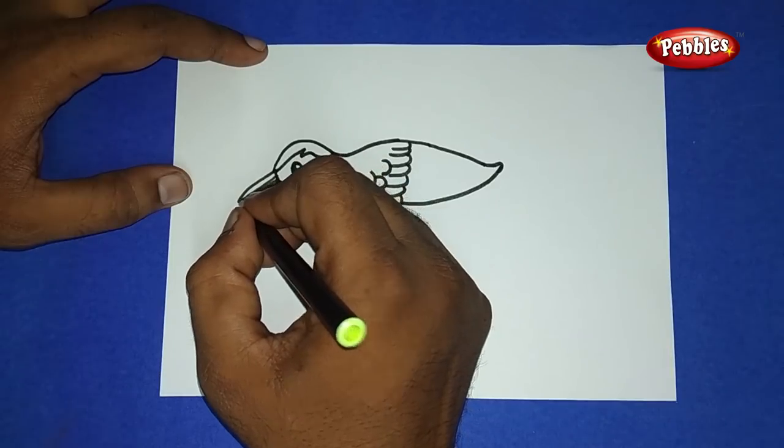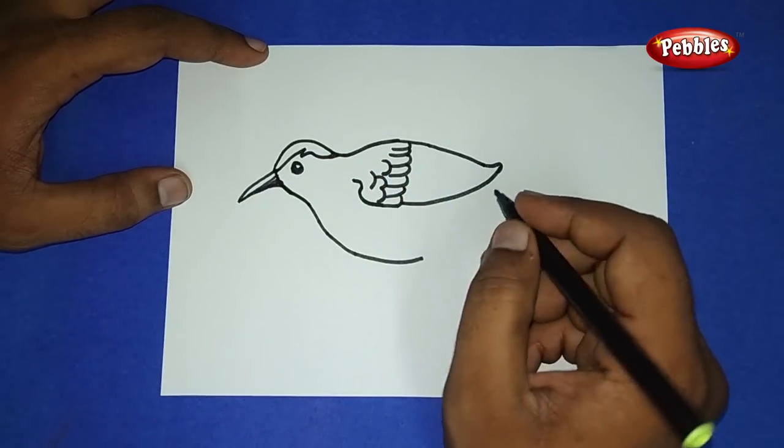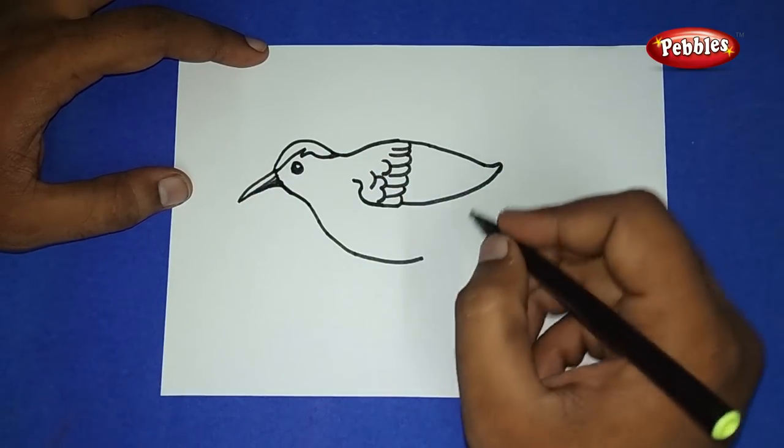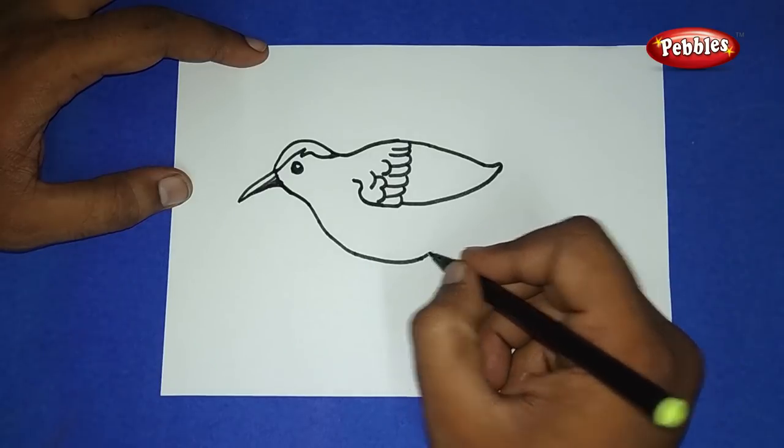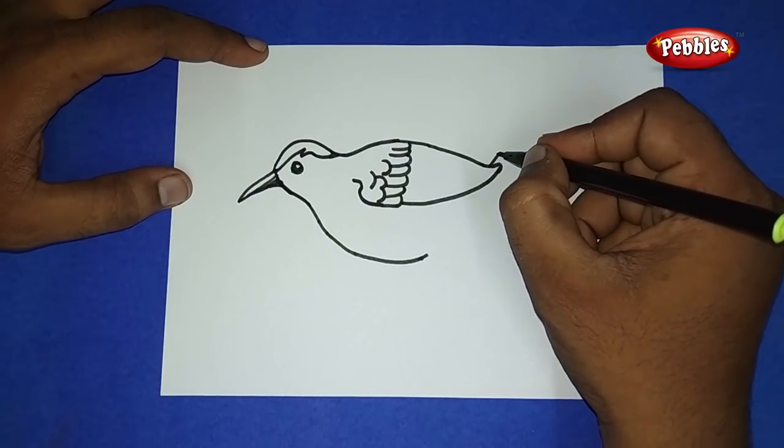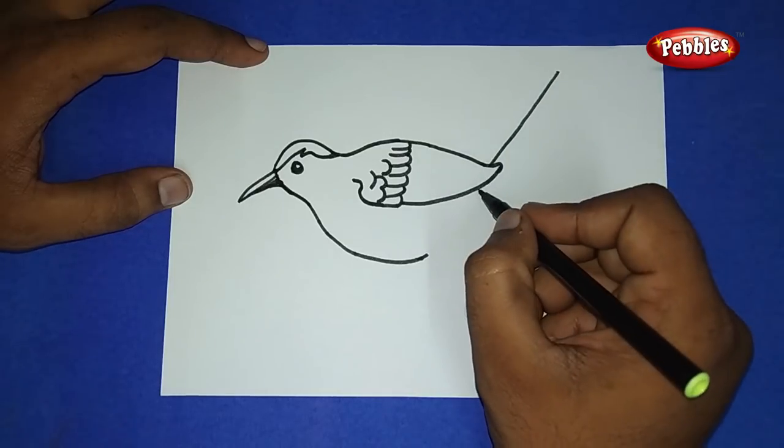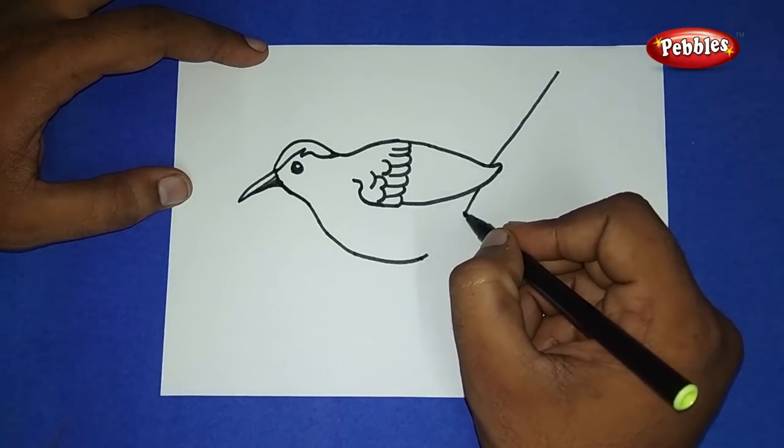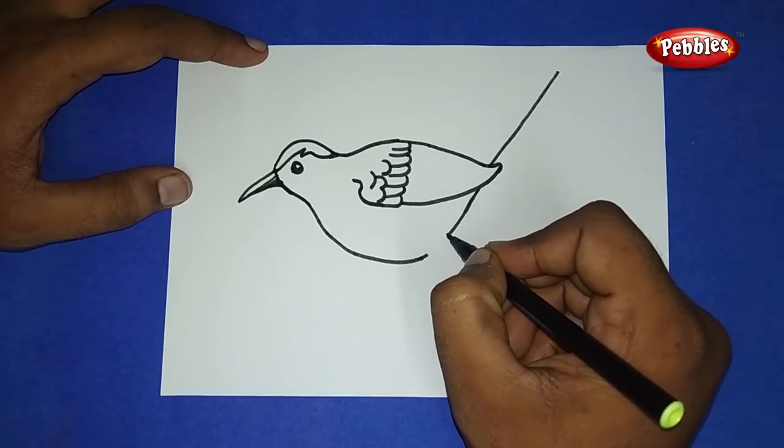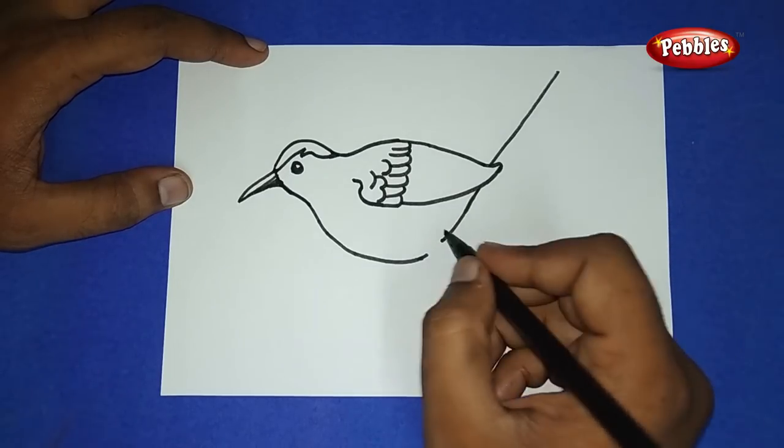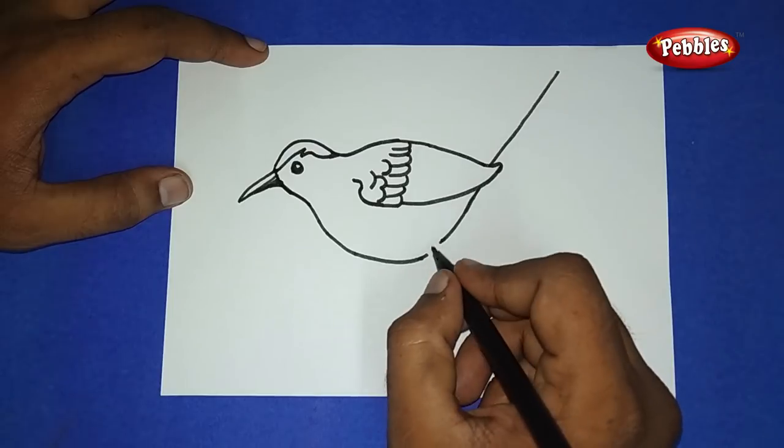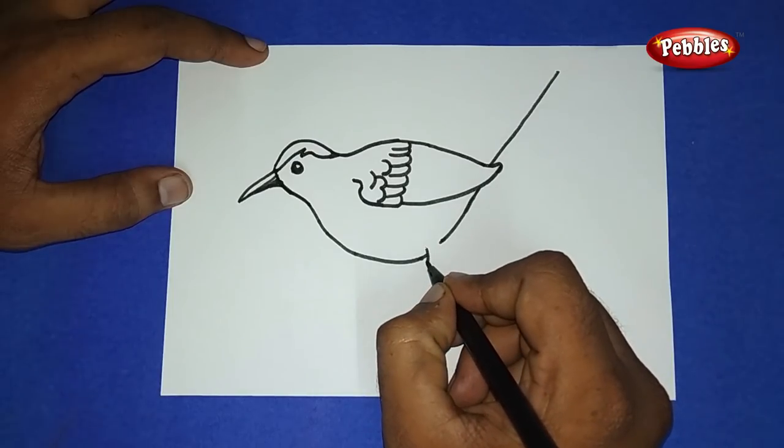Now from the back side at the tip of the nose, draw a slanting line that goes upside. And again come down slantingly and join the body together. Draw a leg, leaving some gap at the left side.